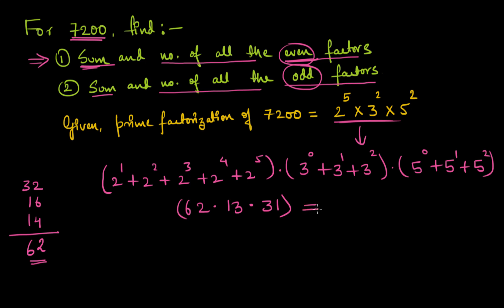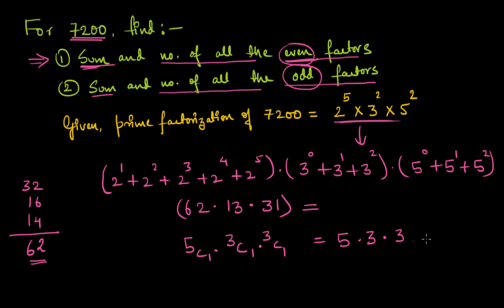So this multiplication gives the sum of all even factors: 62 × 13 × 31. For the total number of even factors, I count the total terms in this multiplication: 5 terms from the first bracket, times 3 terms from the second, times 3 terms from the third — that is 5 × 3 × 3 = 45. So 7200 has 45 even factors, and their sum is 62 × 13 × 31.